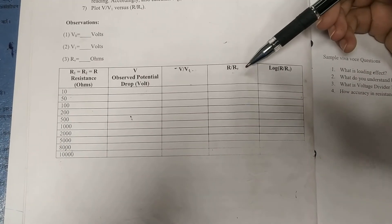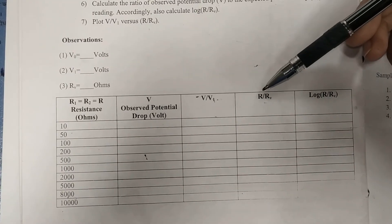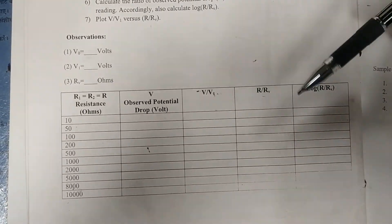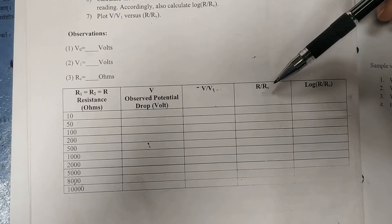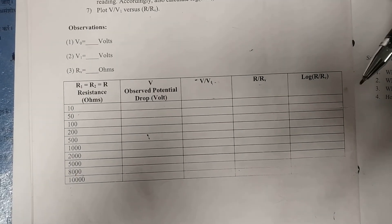After this, we have to calculate R by Rv. Here, R is simple this resistance and Rv is the resistance of voltmeter that we have calculated in step 1.